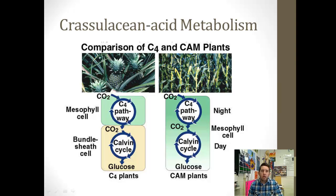These are huge evolutionary steps for these types of plants — very advantageous. C4 and CAM photosynthesis is something like eight times more efficient than C3 photosynthesis, so it's a much more evolved metabolism. Who knows — maybe more plants will be moving in that direction. We're seeing plants evolve right before our eyes, and it's an interesting and important point in our discussion of photosynthesis.